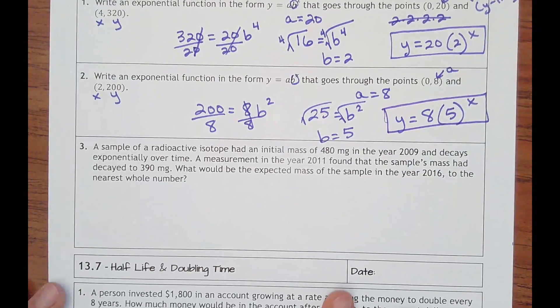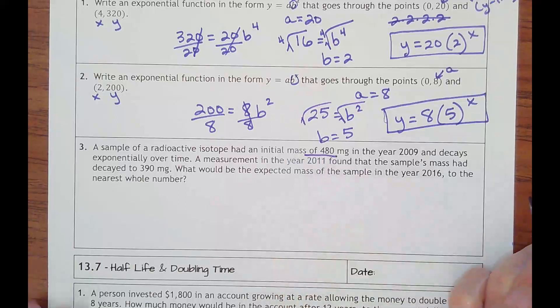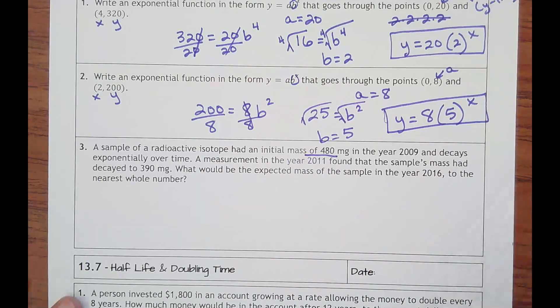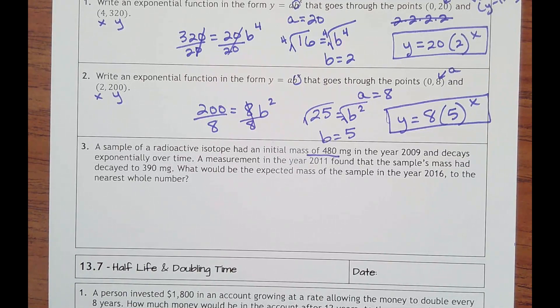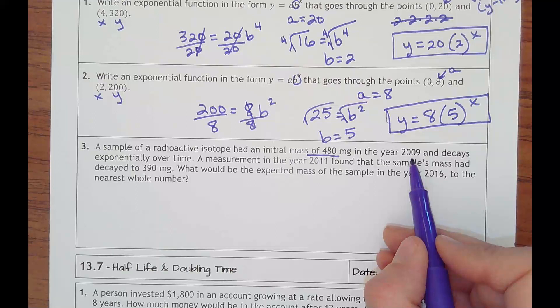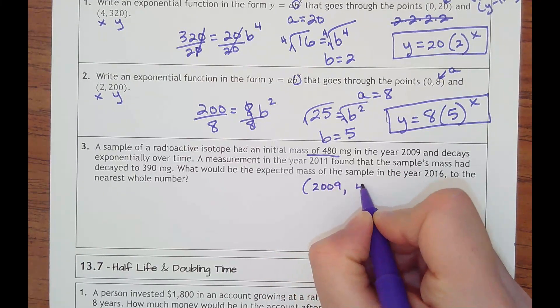Number 3: A sample of a radioactive isotope had an initial mass of 480 milligrams in the year 2009 and decays exponentially over time. A measurement in the year 2011 found that the sample's mass had decayed to 390 milligrams. What would be the expected mass of the sample in the year 2016 to the nearest whole number? So they give us the initial. The problem is they're telling us that's in the year 2009, and I don't really want to write the point (2009, 480).